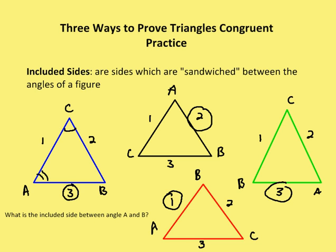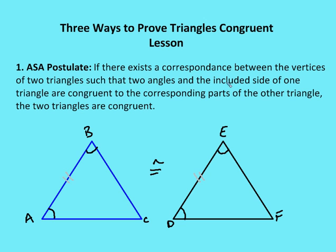Now let's cover the last postulate for today: number three, the Angle-Side-Angle postulate. The official wording says if there exists a correspondence between the vertices of two triangles such that the two angles and the included side of one triangle are congruent to the corresponding parts of the other triangle, then the two triangles are congruent. So if angle A is congruent to angle D, the included side AB is congruent to DE, and angle B is congruent to angle E, then the two triangles are congruent.